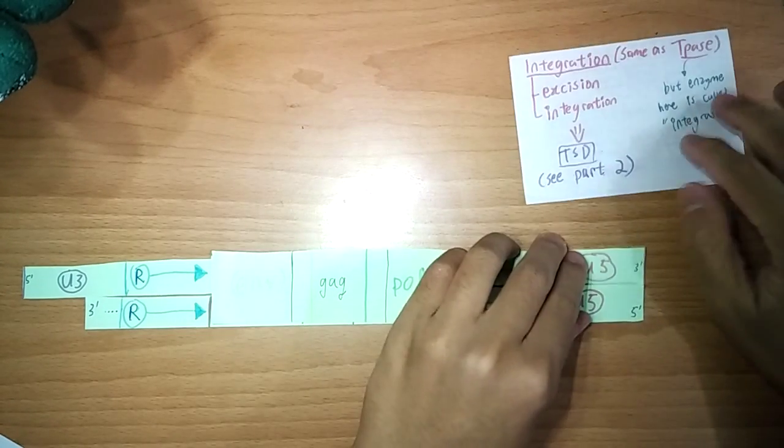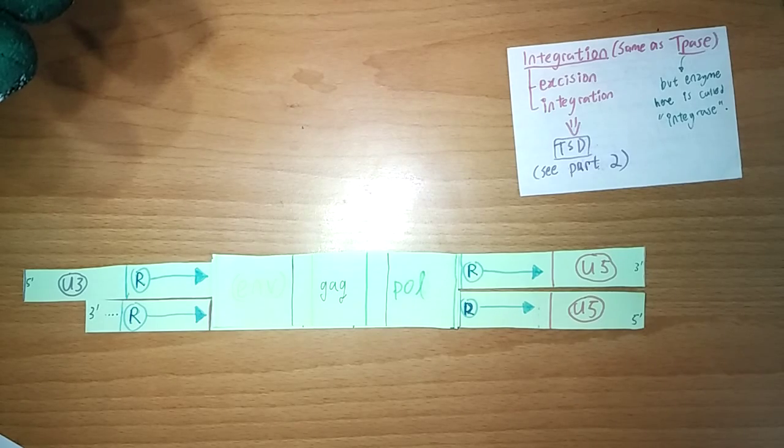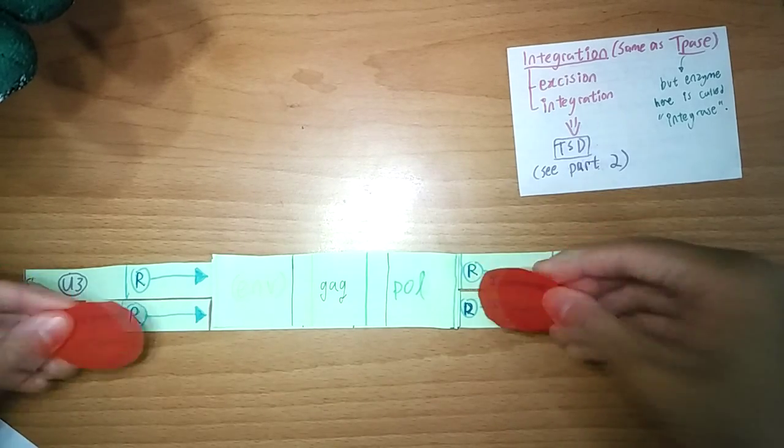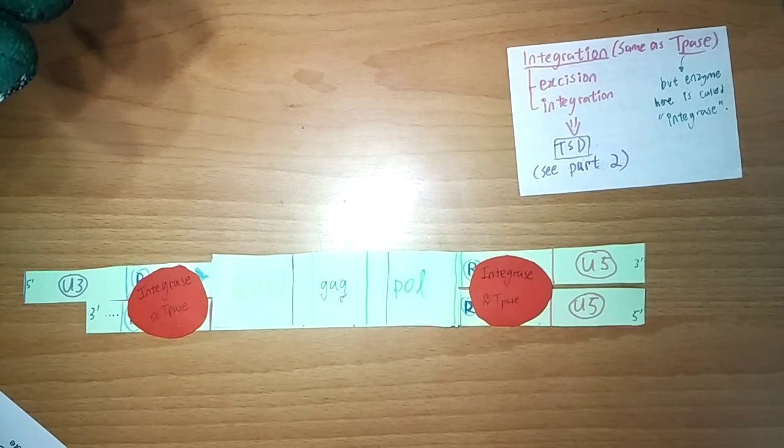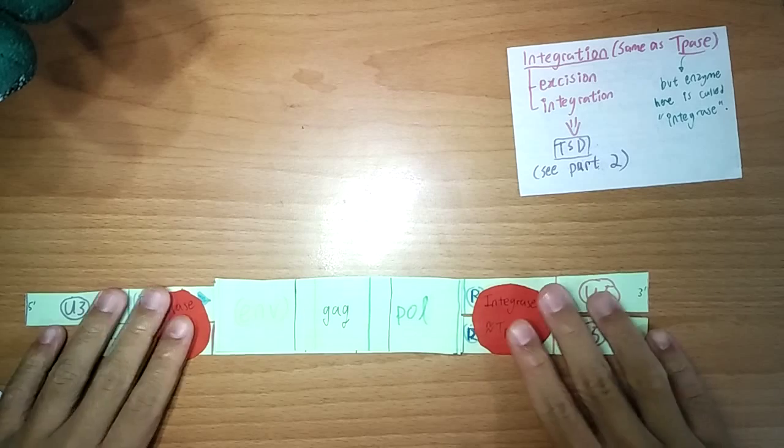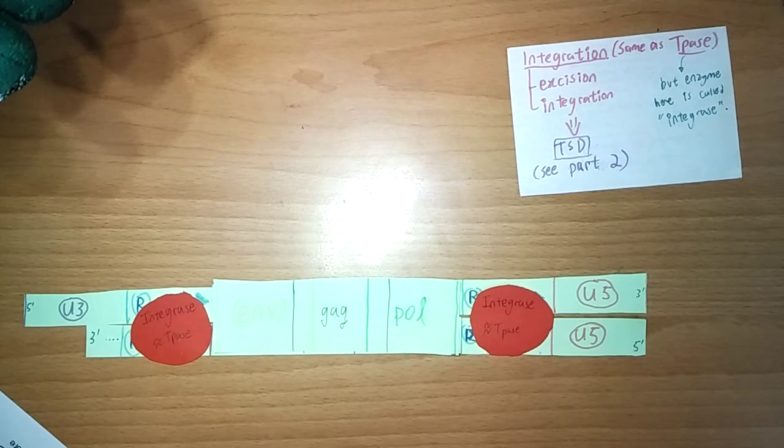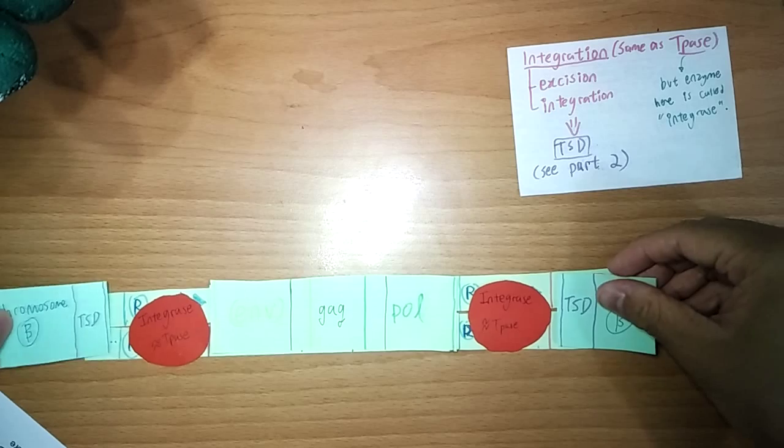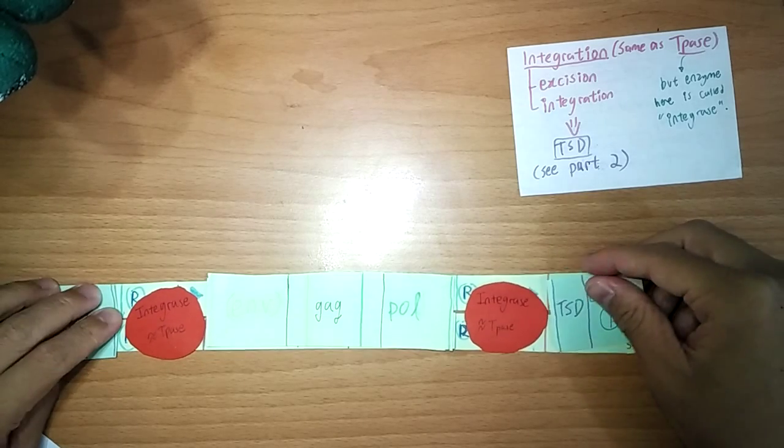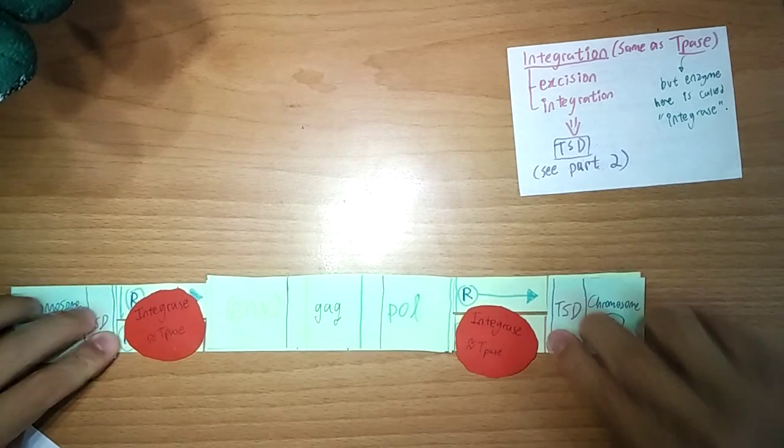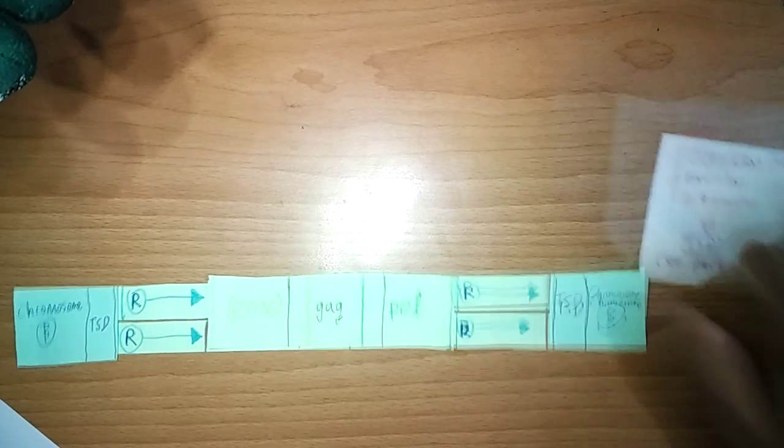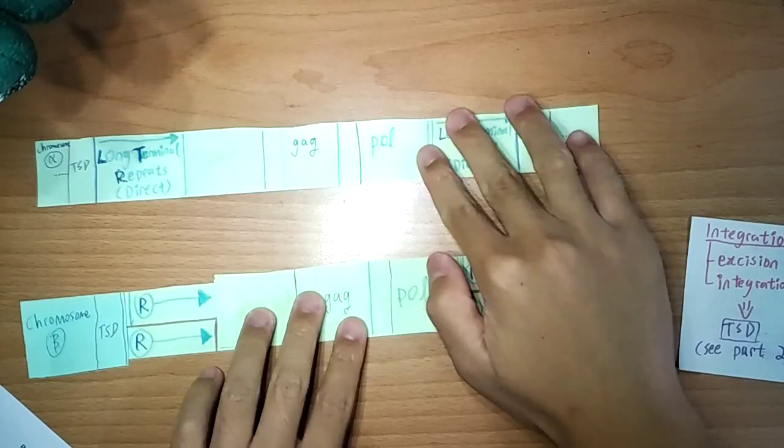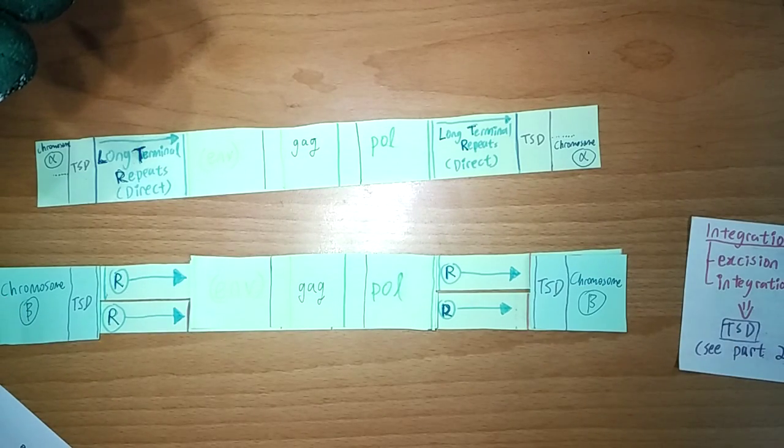So, after this, your integrase will come, bind to the repeats. In the same process as the previous video, it will integrate it by excising this end, and putting it into another chromosome here. And, because it's the same process, you get your target-side duplications. And, as you can see, it's another chromosome, exactly the same. So, it's replicated, and it's retrotransposed.